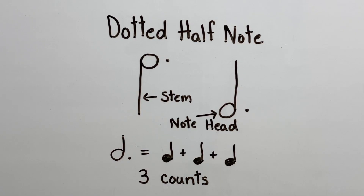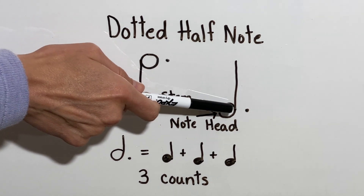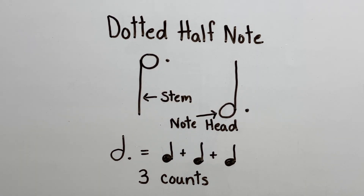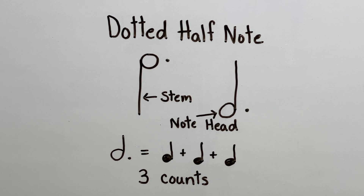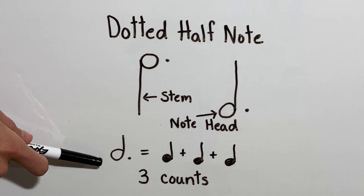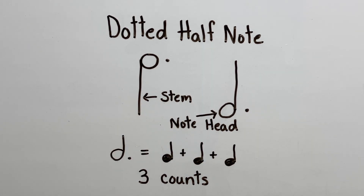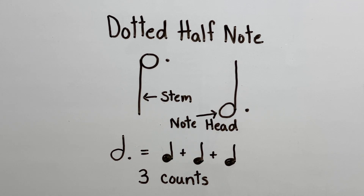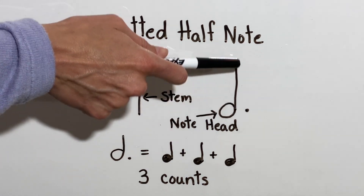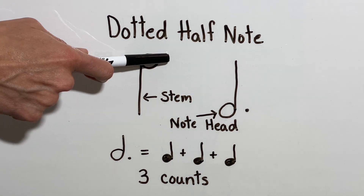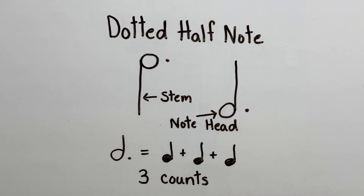The next note we're going to look at is a dotted half note. A dotted half note looks an awful lot like a half note, but the difference is we have a dot that's right behind the note head. When we add that dot to the half note, it becomes a dotted half note, and it's worth three counts or beats. With my musical math, a dotted half note equals one plus one plus one — a dotted half note is going to equal three quarter notes. We still have our stem; if it goes down, it goes in front of the note head, and if it goes up, it goes behind the note head. The note head is empty, but the difference is we have a dot. This is what our dotted half note looks like.